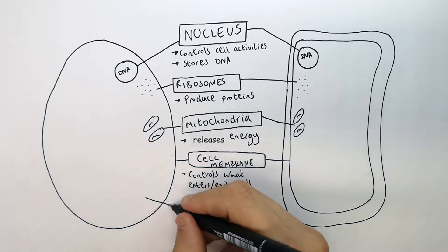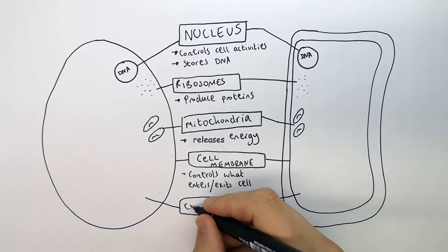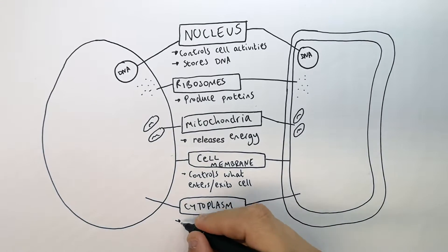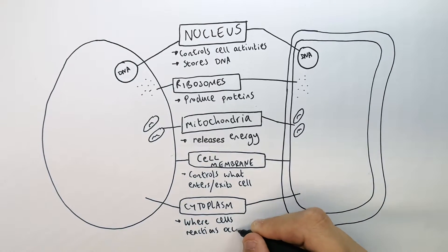The last one is the cytoplasm. The cytoplasm is a jelly-like substance where cell reactions occur.